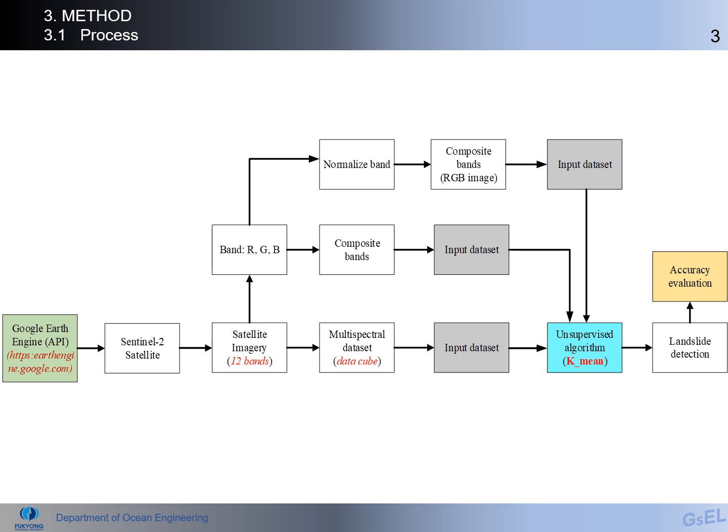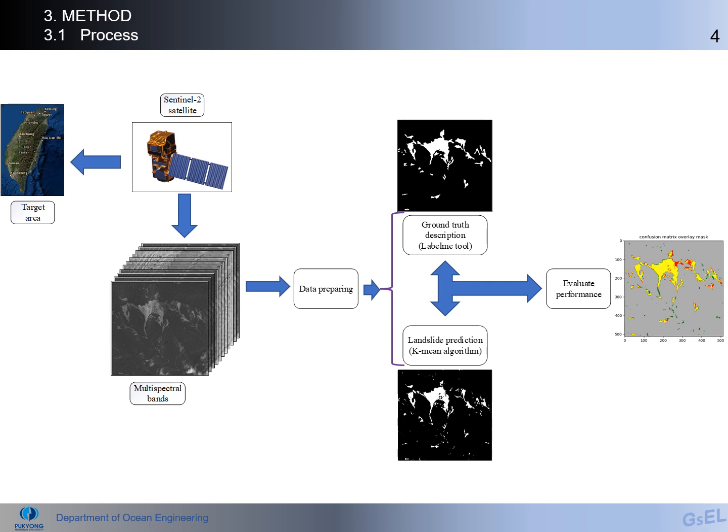This is the overall research process. From the Google Earth Engine API, we download data from the Sentinel-2 satellite. We obtain satellite imagery and separate into three band groups: RGB for the first input data group, and also using all bands for multispectral dataset input. After that, we apply the unsupervised algorithm for landslide detection.